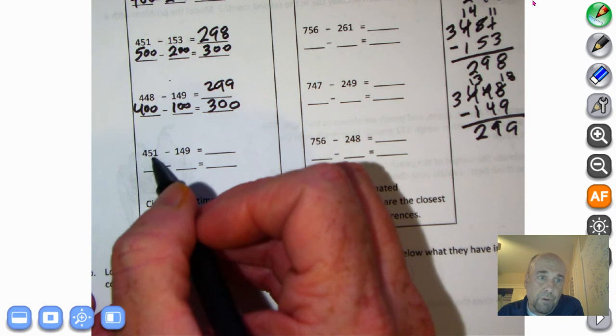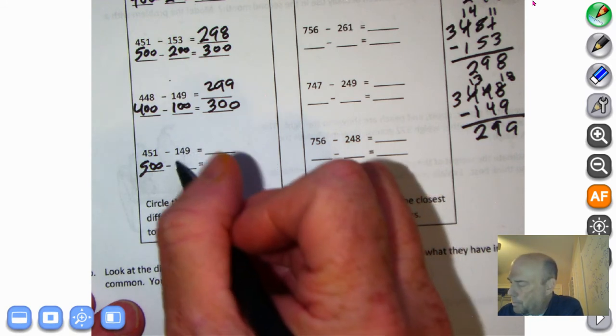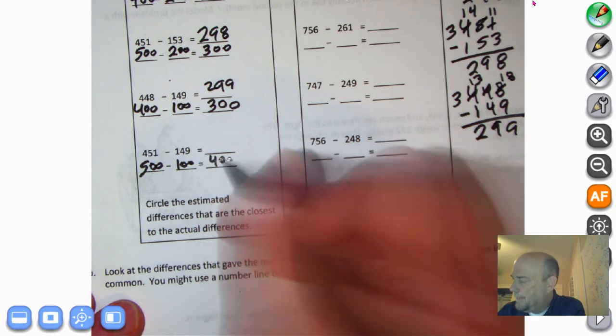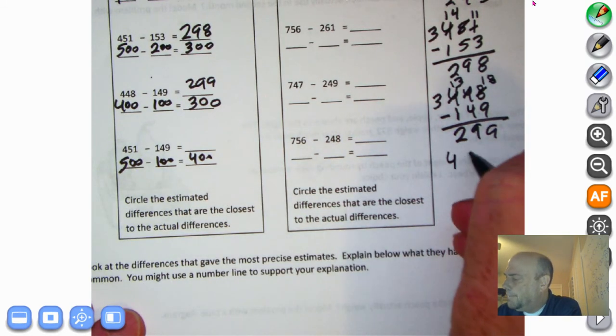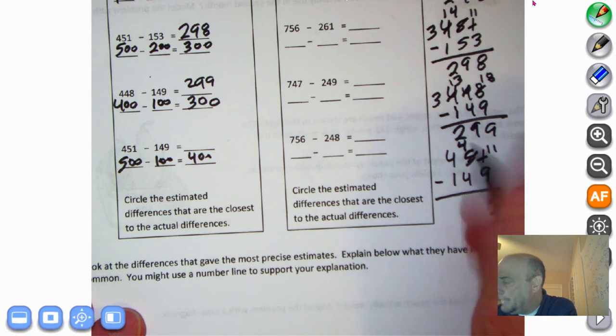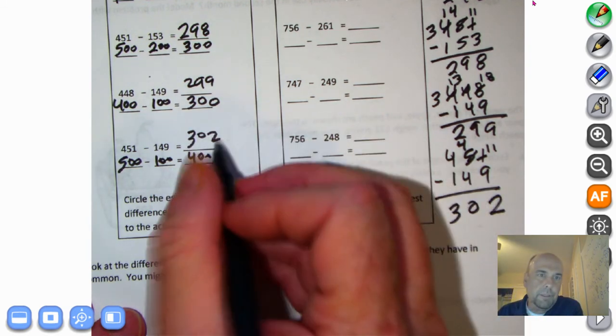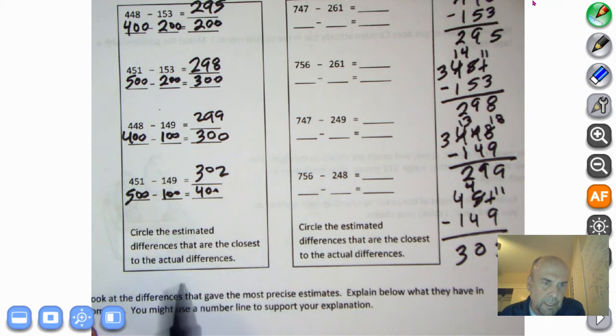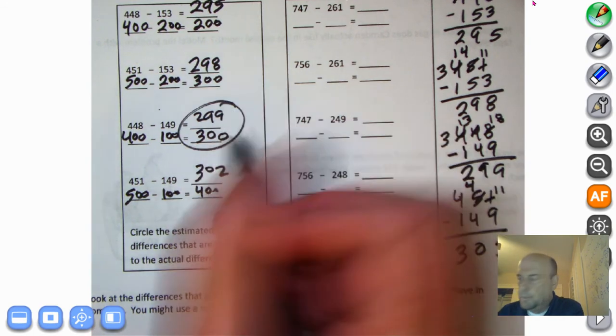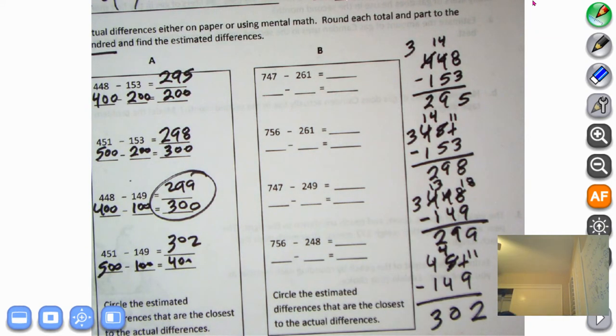Let's see this one. 451. It's greater than 450, right? So we round up to 500. 149 is less than 150, so we round down to 100. And our total is 500 minus 100 is 400. Let's see what the actual is over here. 451 minus 149. I can't take 9 away from 1. I'm going to decompose a 10, bring it over here. 10 plus 1 is 11. 11 minus 9 is 2. I can't take 4 tens away from 4 tens for 0. 400 minus 100 is 302. We're not anywhere close, are we? 400 and 302. What's the closest one? Because we circle the estimated differences that are the closest to the actual differences. I think it's this one right here. And this one comes at a close second.